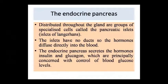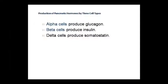The islets of Langerhans contain beta cells and alpha cells. Beta cells secrete insulin and alpha cells secrete glucagon. There are 3 types of cells in total — the third type is delta cells, which secrete somatostatin. So to summarize: alpha cells produce glucagon, beta cells produce insulin, and delta cells produce somatostatin. These are the 3 types of cells that produce pancreatic hormones.